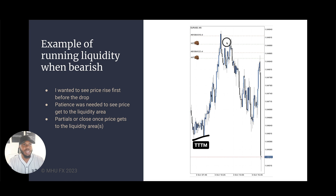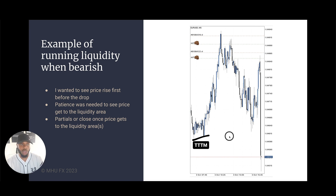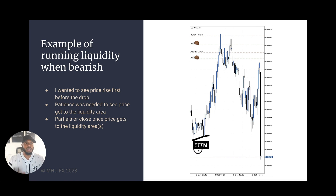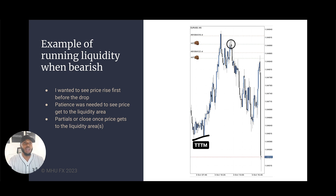Always remember: whenever price is running out some liquidity, that's either going to be an entry or an exit for smart money. When I entered these sells, think about where are the willing participants who want to continue my sell — those are the sell stops beneath the relative equal lows. This is why I will hold all the way down there. Retracements wouldn't scare me; I know there are willing participants down here. I'm always trying to offload my position to somebody else. And always remind yourself — there are sell stops down here, this must be where it wants to go. This little retracement shouldn't phase you, and you shouldn't be moving your stop loss into profit early.